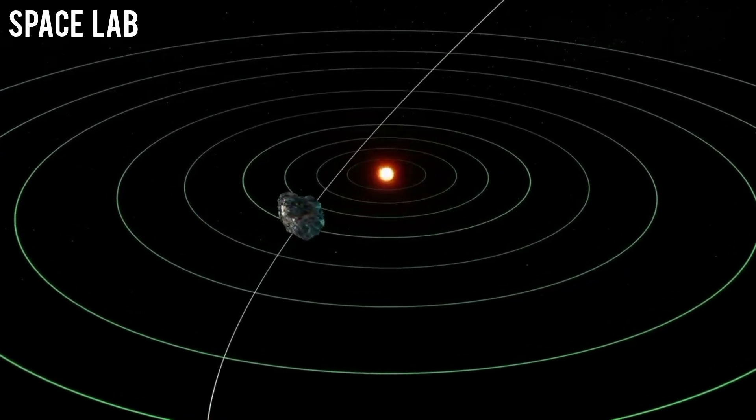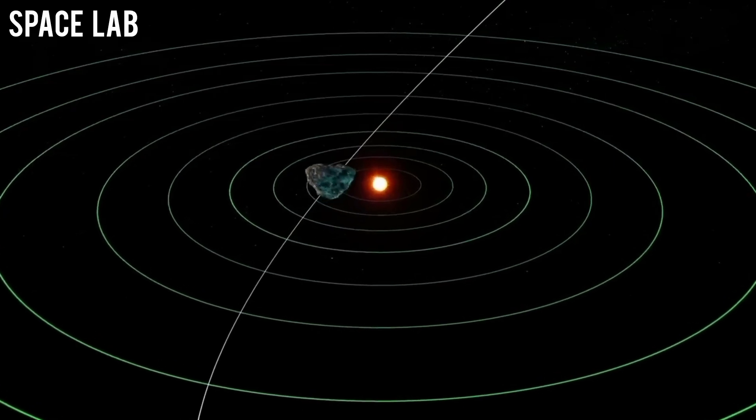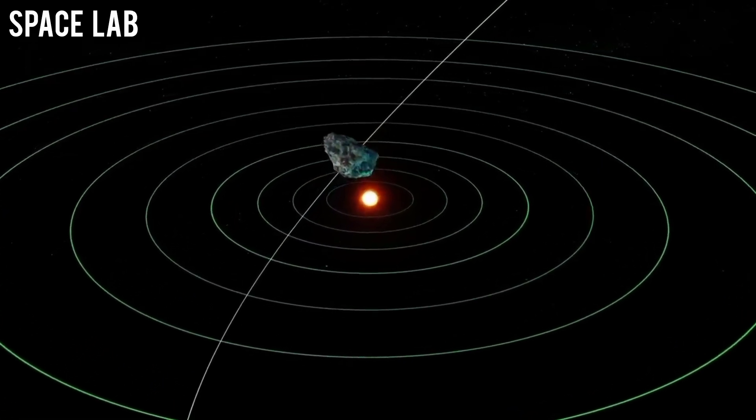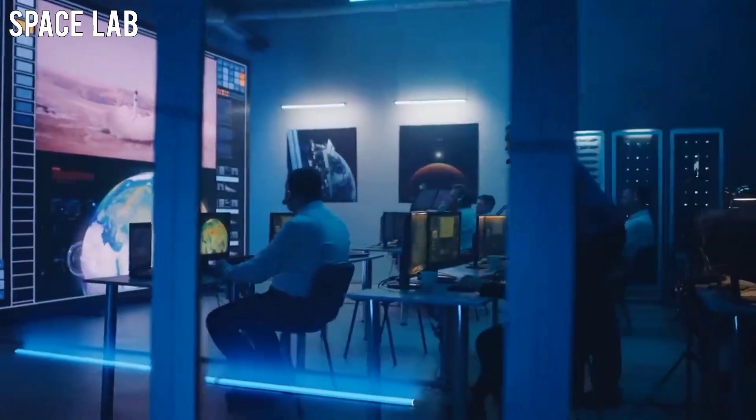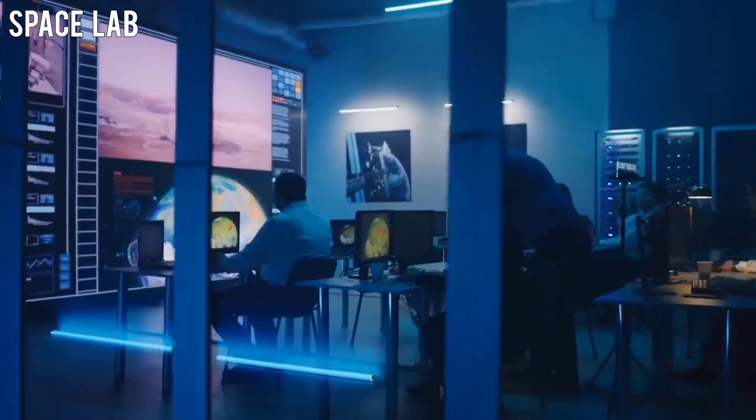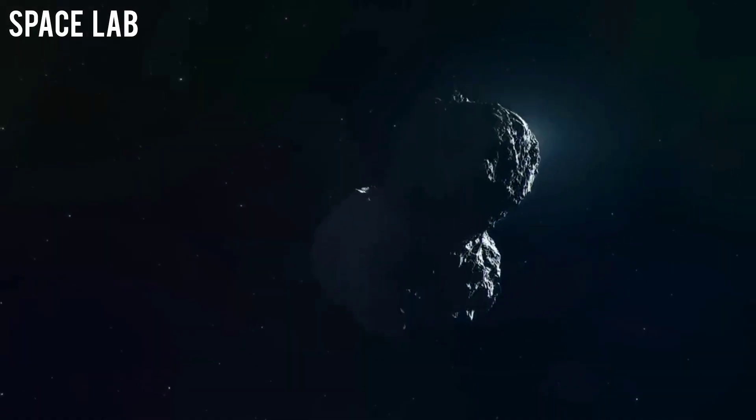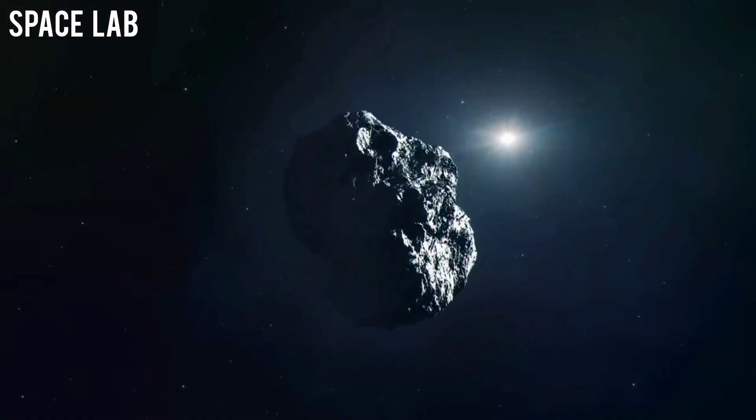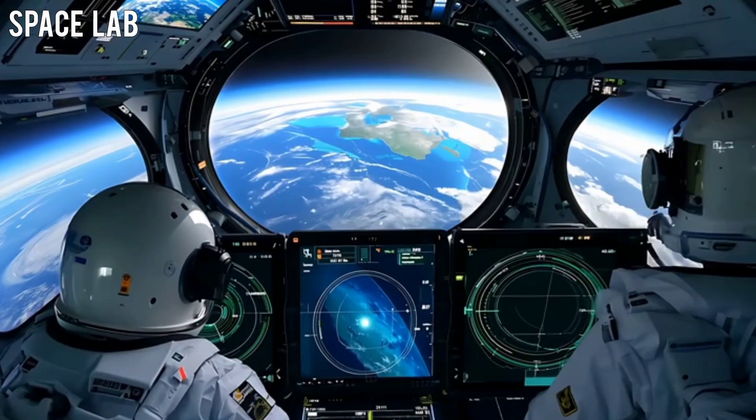Those periodic bursts didn't match any known natural process. It was almost like a programmed cycle. When scientists plotted the pattern, they found something chilling. Each burst corresponded to a slight course correction, as if 31 Atlas was adjusting its trajectory, and not toward deep space, but toward Earth's orbital plane.